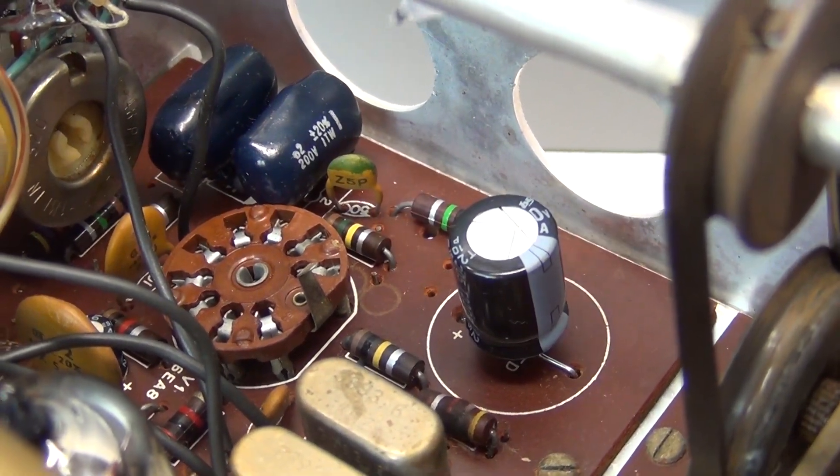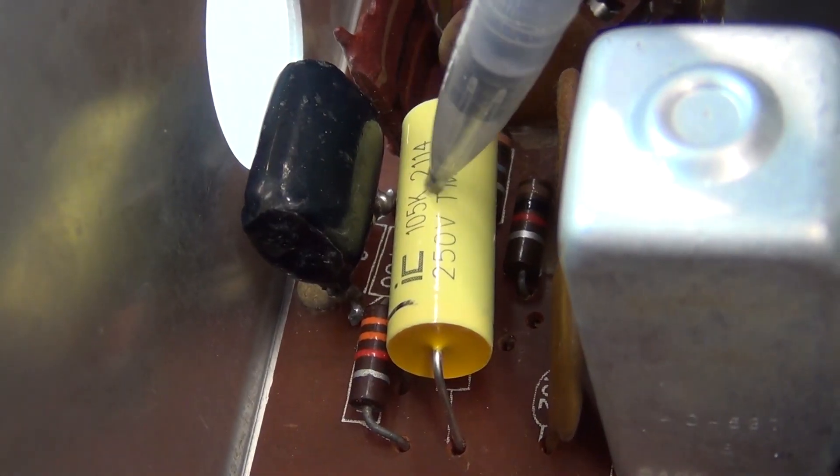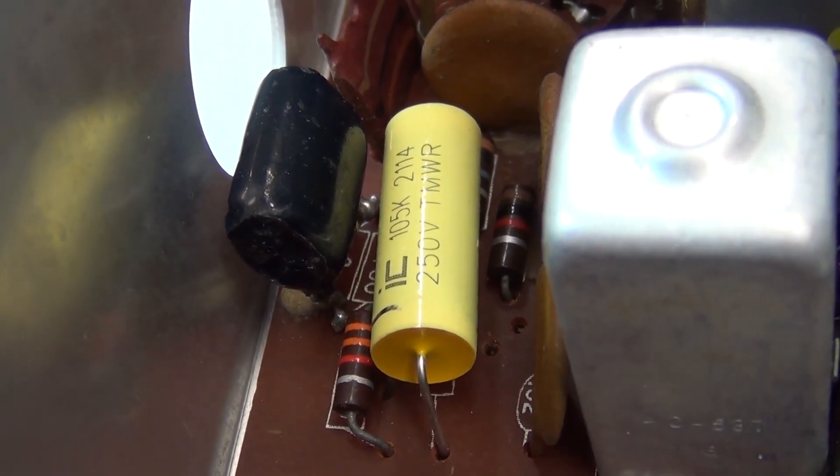First item on the repair list was to replace the five electrolytic and two paper capacitors. That process went easily, so I didn't bother to film it.